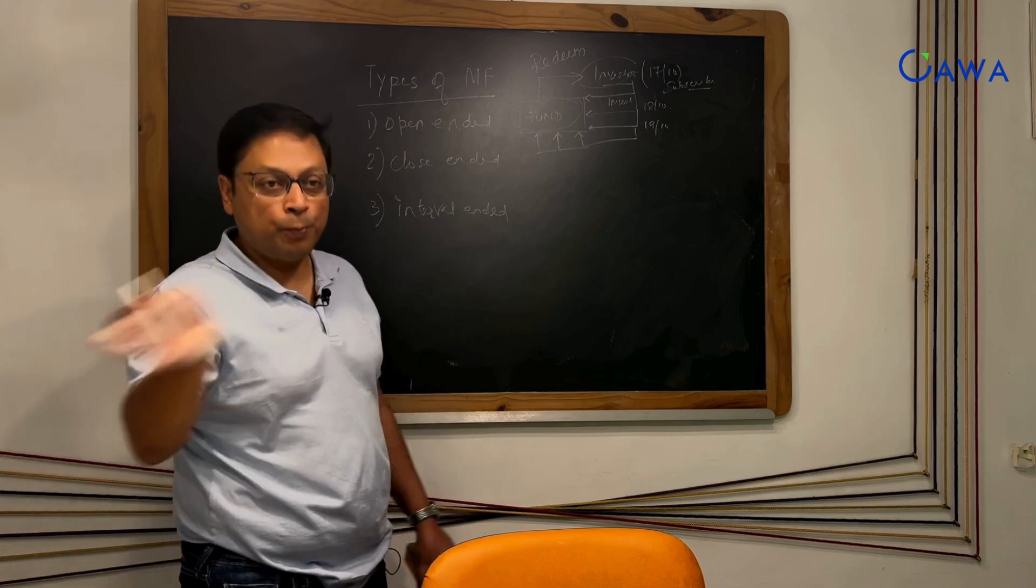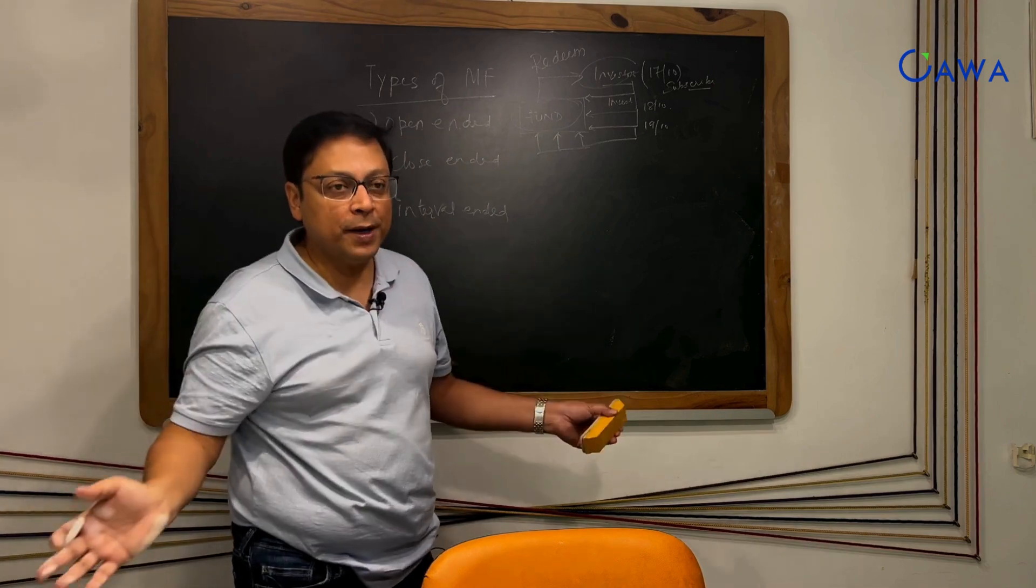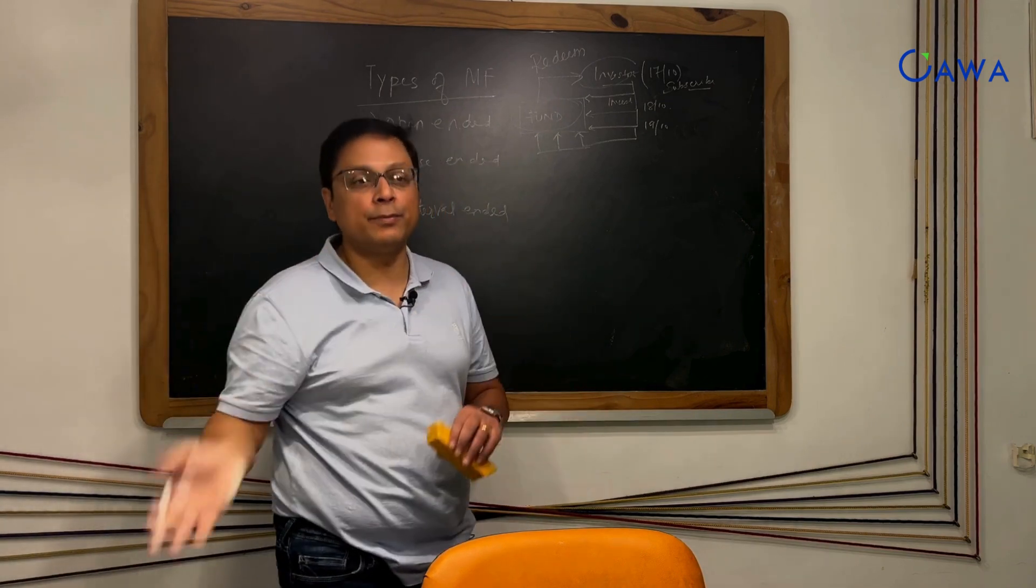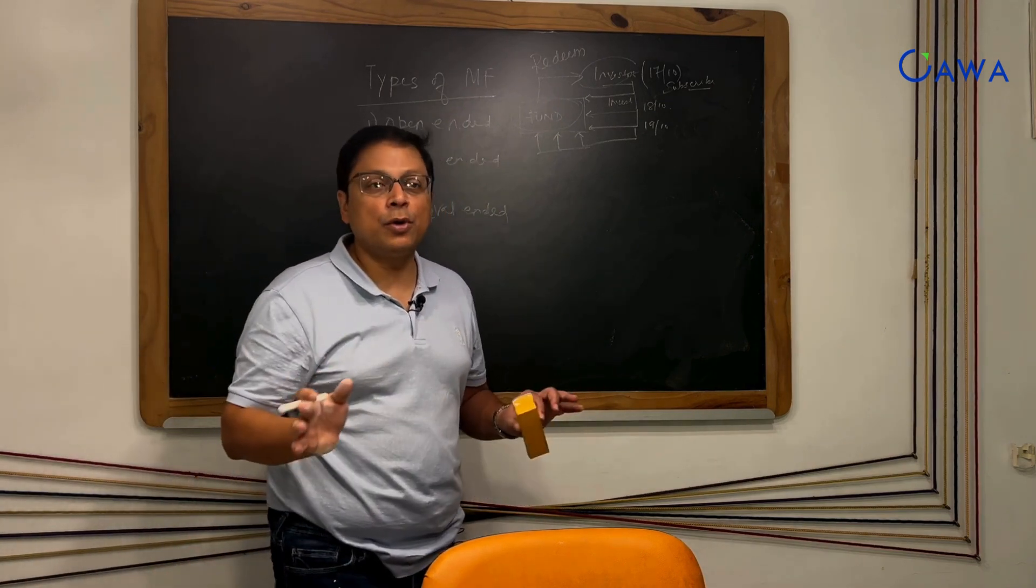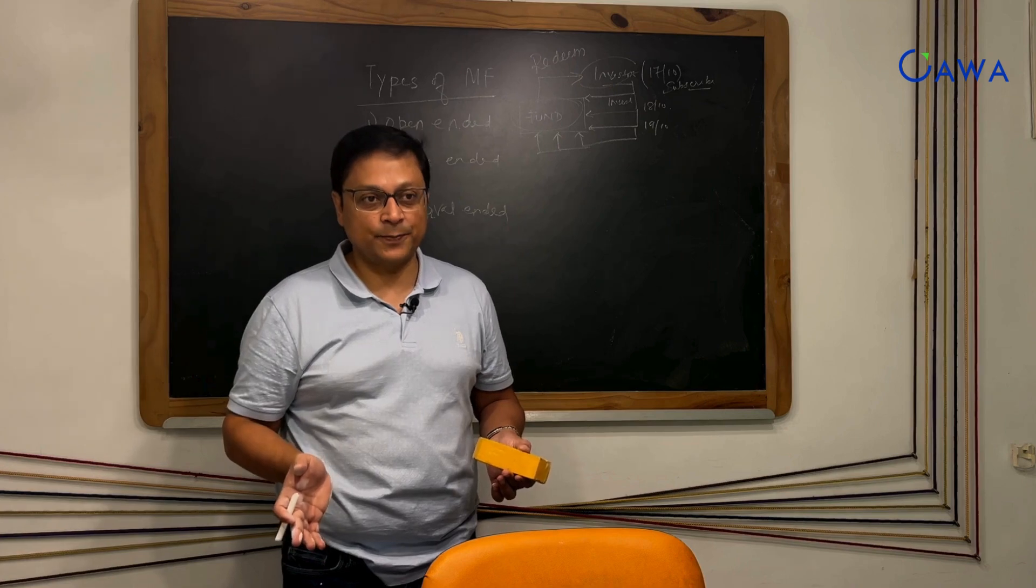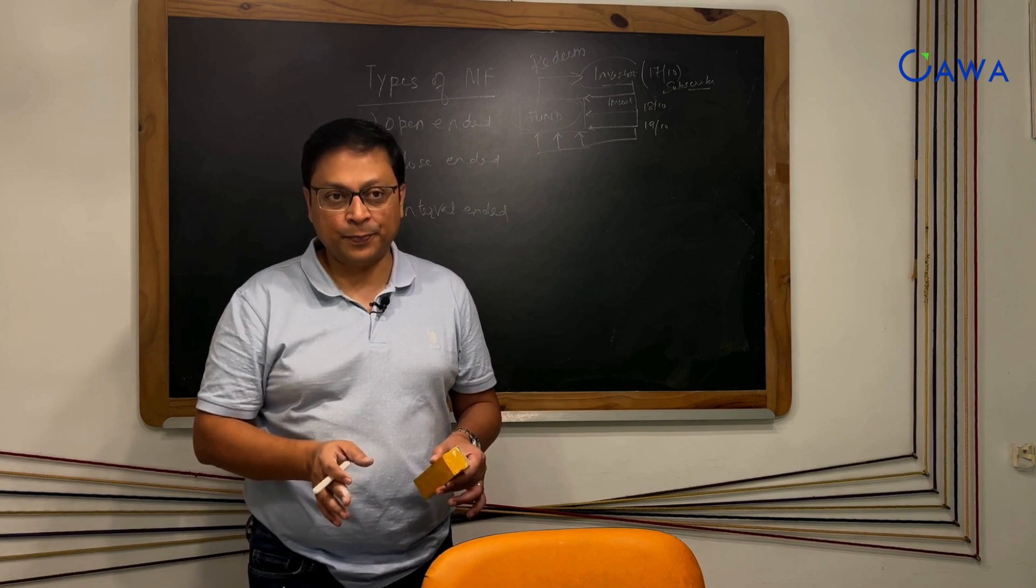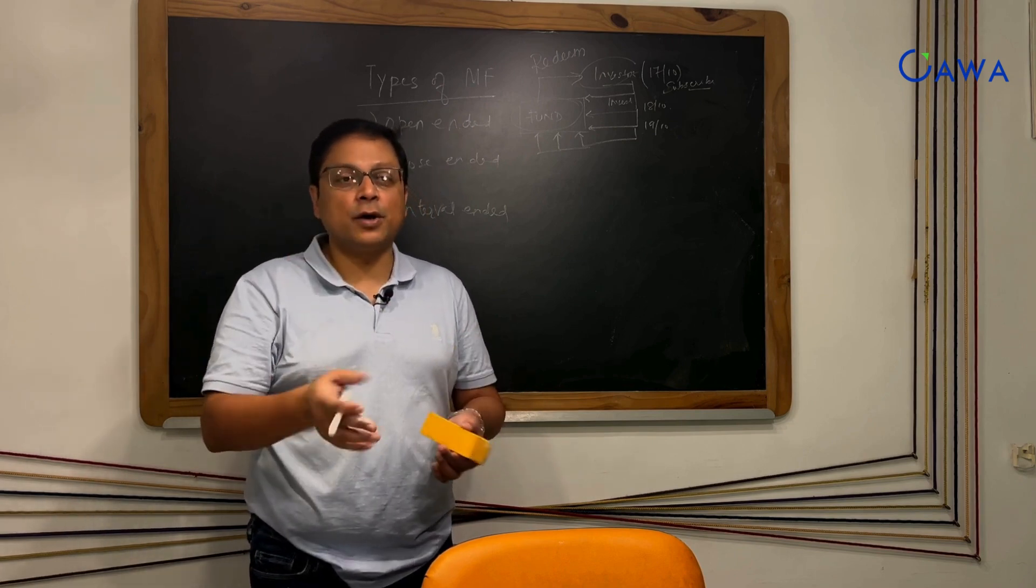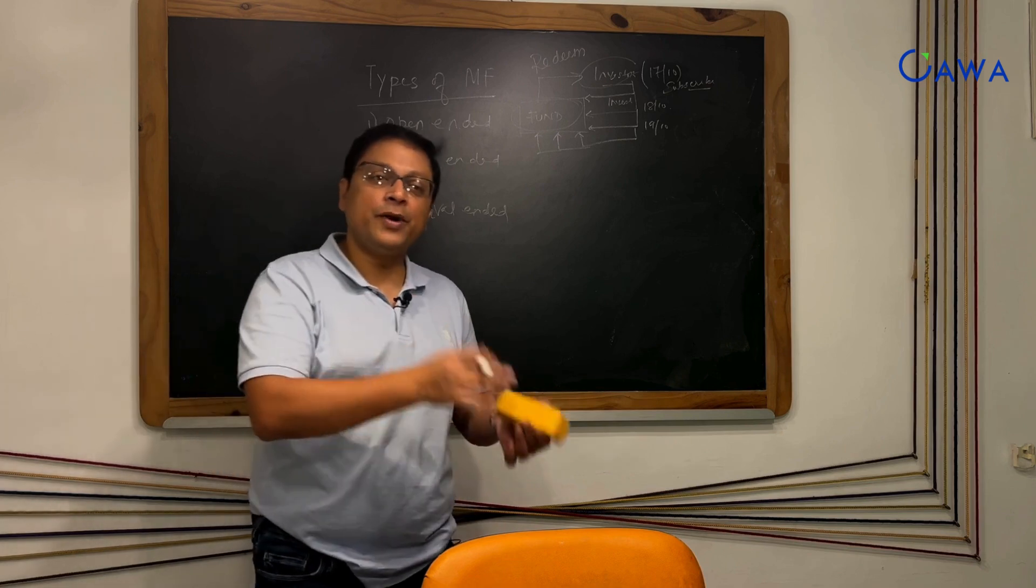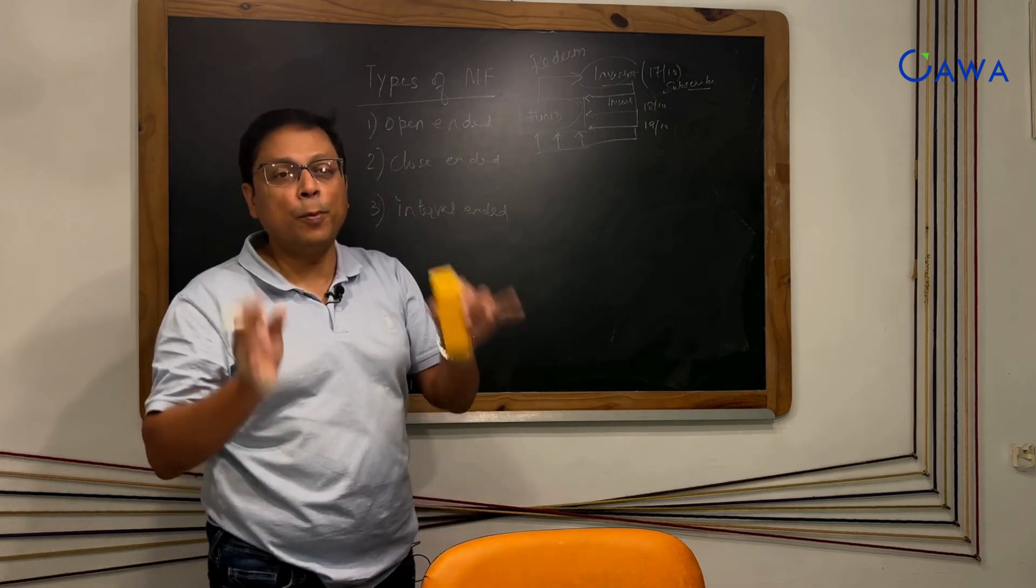If there is a fund where you decide when you want to invest and when you want to pull out the money, it is called open-ended. The fund is always open for subscription and redemption. There is no locking. You will always invest on the day you want and you will redeem the day you want. Those kind of funds are called open-ended funds.